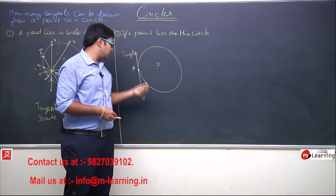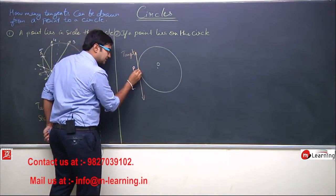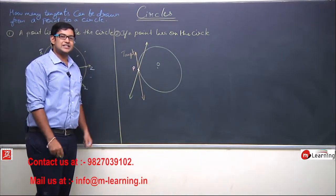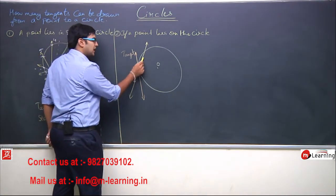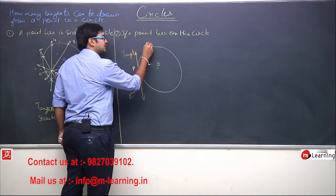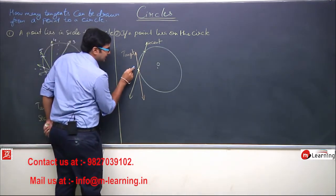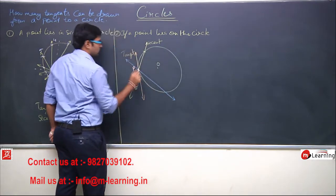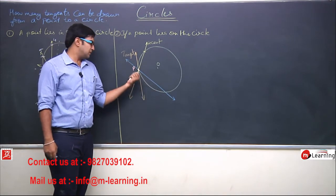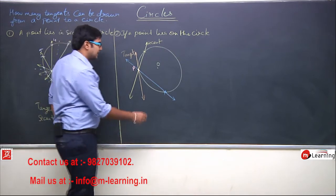Kya mein aur tangents draw kar sakta hoon isi point se? Is point se agar mein ek line thodi si tilted banau, toh kya woh line bhi ek tangent hai? Aap dekh sakte hain ye line P point se pass ho rahi hai, aur P ke baad circle ko bhi intersect kar rahi hai — toh ye line do points ko intersect kar rahi hai. Toh this is not a tangent, it is basically a secant. Similarly, another line drawn from P also intersects the circle at two points — this line is not a tangent, this is again a secant.